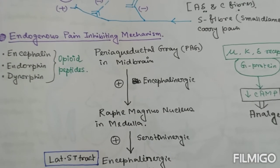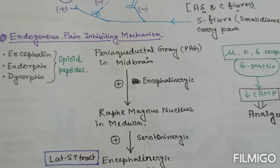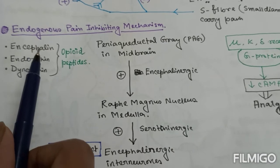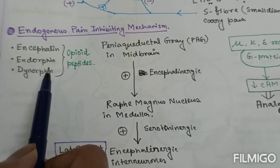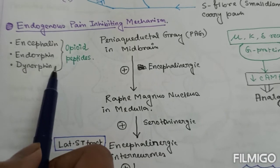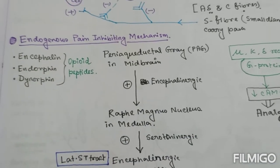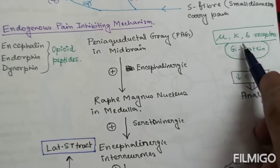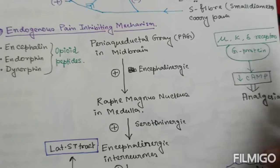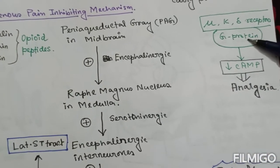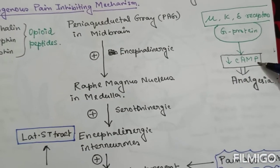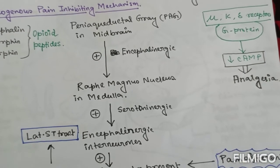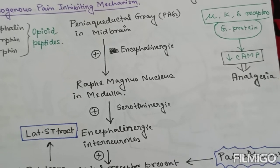Here, opioid peptides play a major role. Endogenous opioids are mainly three types: enkephalin, endorphin, and dynorphin. These opioid peptides act on various G-protein coupled receptors called mu, kappa, or delta receptors, which ultimately causes reduction of cyclic AMP, and thereby hyperpolarization, and thereby analgesia — inhibition of the pain stimulus.